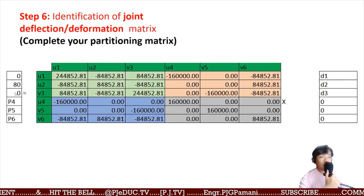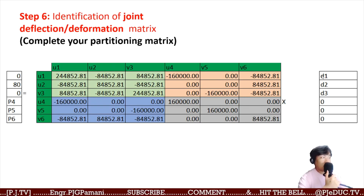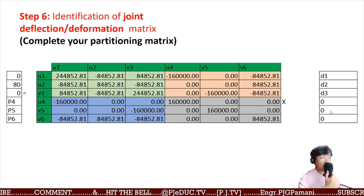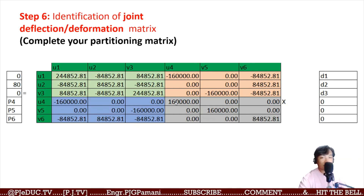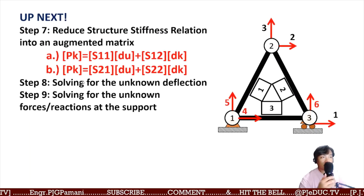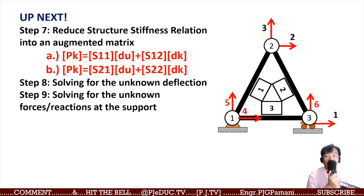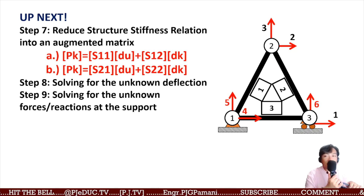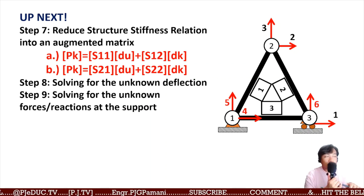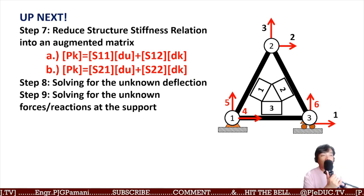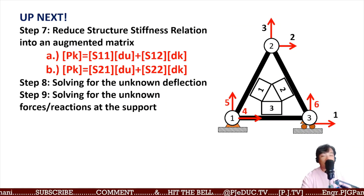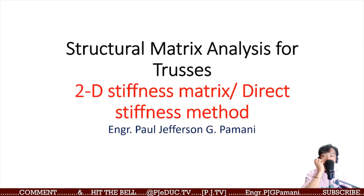The partitioned matrix separates known forces, unknown forces (support reactions), known deflections, and unknown deflections alongside the general global stiffness matrix. Next, we reduce the structure stiffness matrix into an augmented matrix, then solve for the unknown deflections and unknown support reaction forces. This will be covered in the next lecture video.